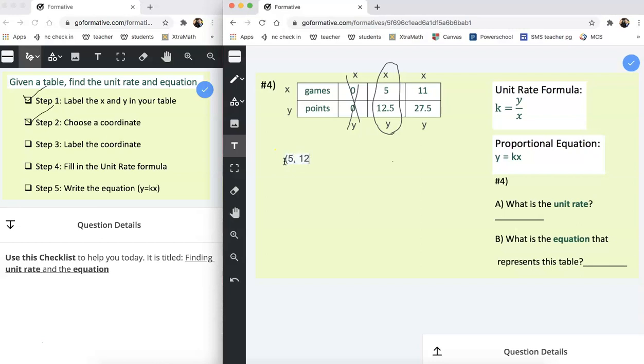And then I move on to step three which is label the coordinate. So I've chosen the coordinate, now I'm going to label the coordinate. The 5 is x, the 12.5 is y and then I move from the 5 over to the words and 5 represents games. 5 games and then the 12.5 represents points, so 12.5 points.